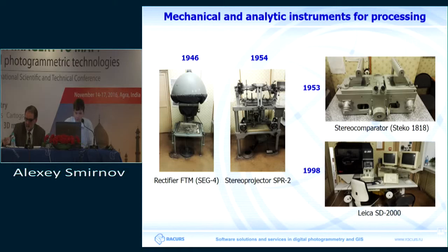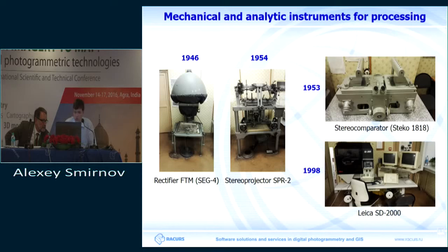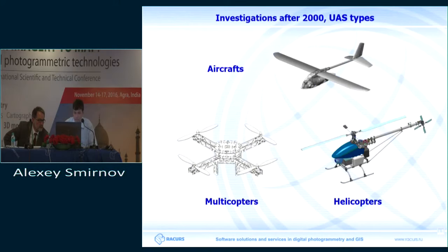Mechanical instruments continued to improve, giving way to other applications like creating maps. We are talking about transformers and stereo projectors; measurement accuracy improved as well. This is a stereo comparator — by the middle of the century they could measure a point to 5-micron accuracy. They then continued to improve to the analytical level, meaning it was not only about data capture and collection, but also doing analysis.